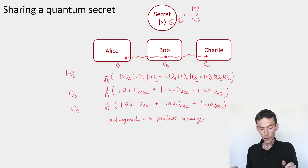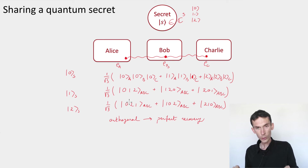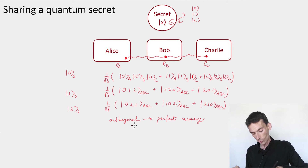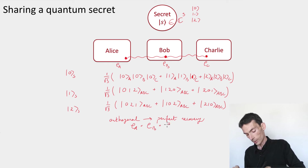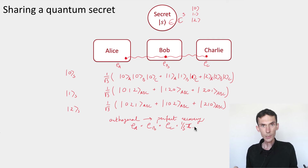The other thing to verify is that the secret sharing scheme is secure, meaning that the reduced densities on Alice, Bob, and Charlie are independent of the secret. That's easy to check, because for each of the three states used here, the reduced density on either party is simply the totally mixed state. So it is always the case that ρ_A = ρ_B = ρ_C = (1/3)I. So this is a valid secret sharing scheme, and it encodes one qutrit into three qutrits.